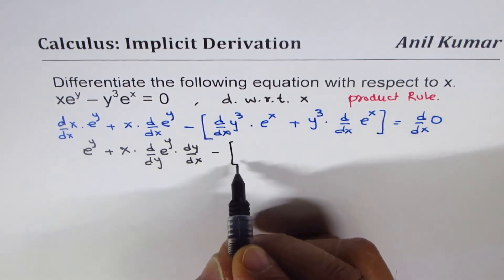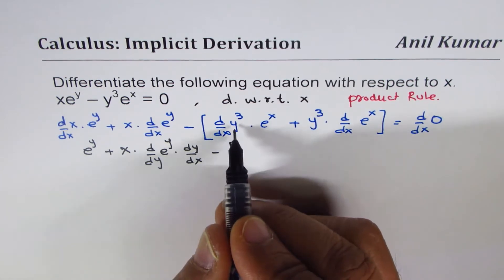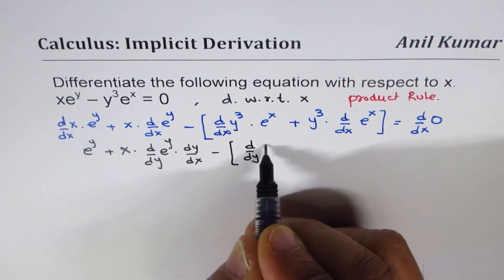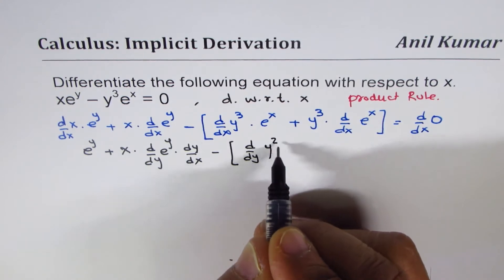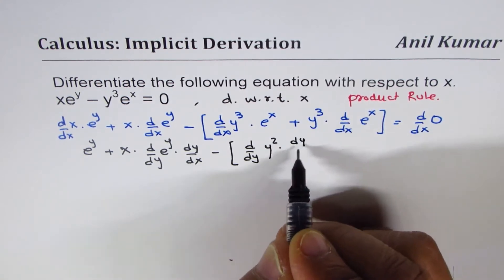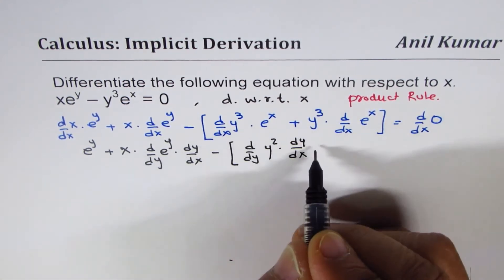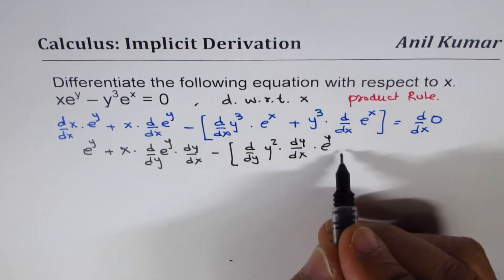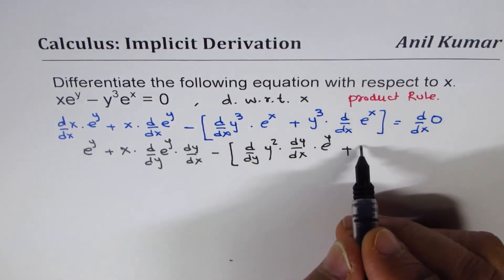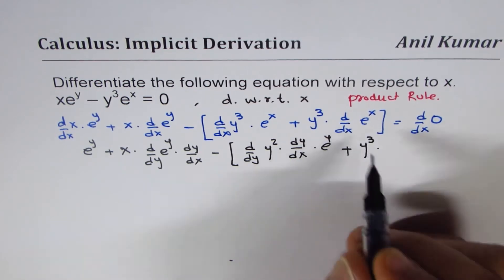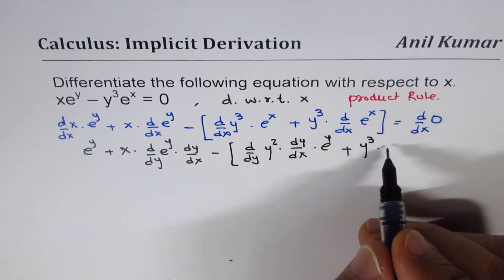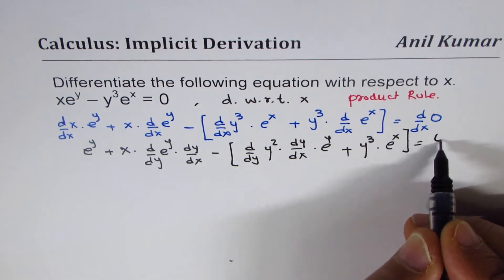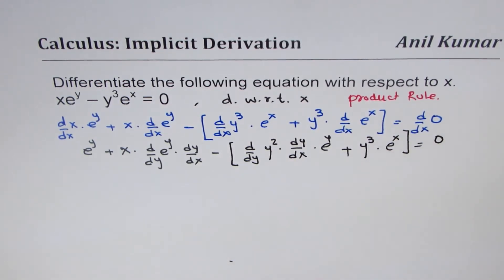We'll do the same thing here. Derivative of y cubed can be written as d/dy of y cubed times dy/dx, and that is to be multiplied by e to the power of x, plus y cubed times derivative of e to the power of x, which is e to the power of x. And derivative of a constant is 0.